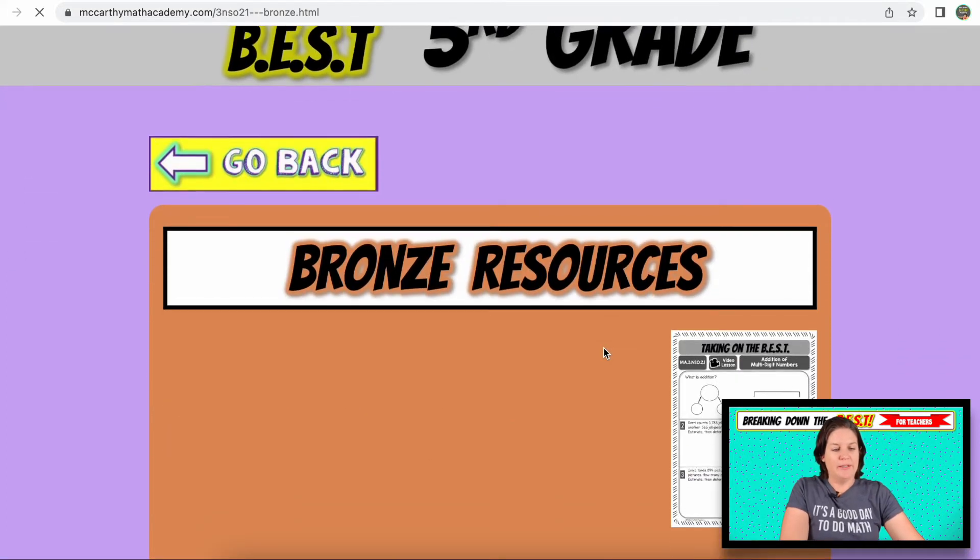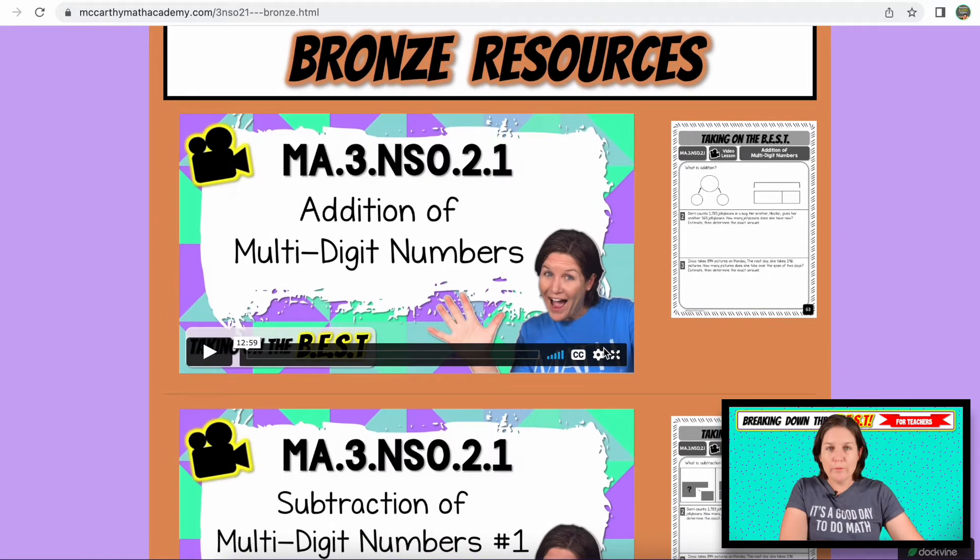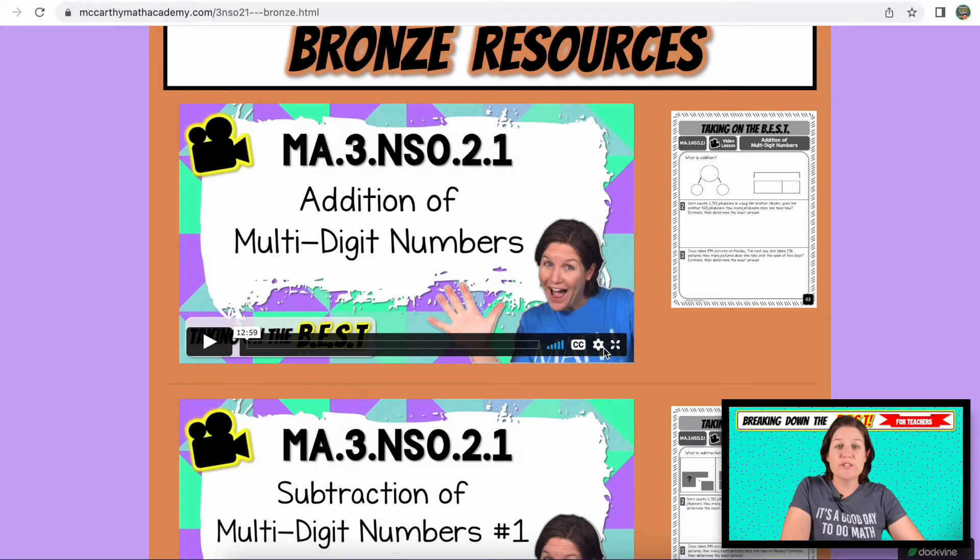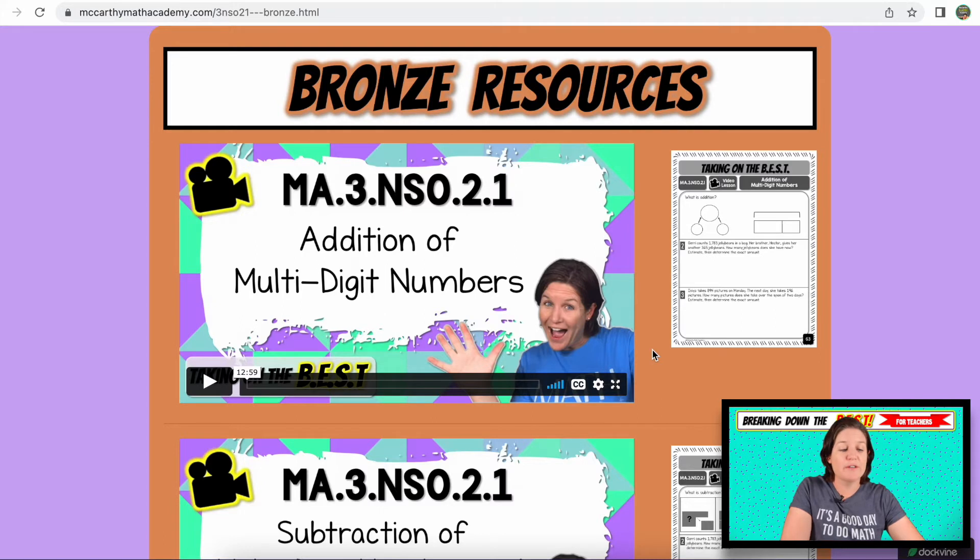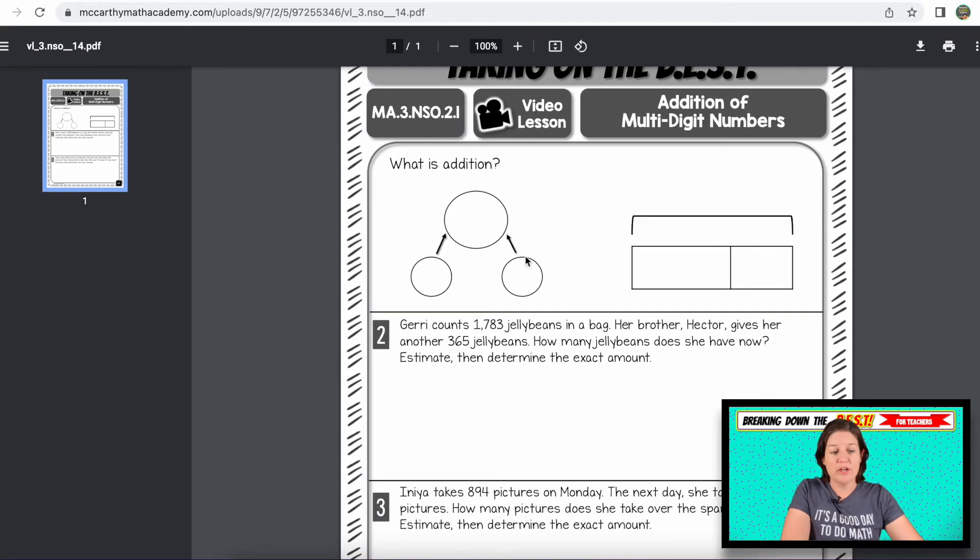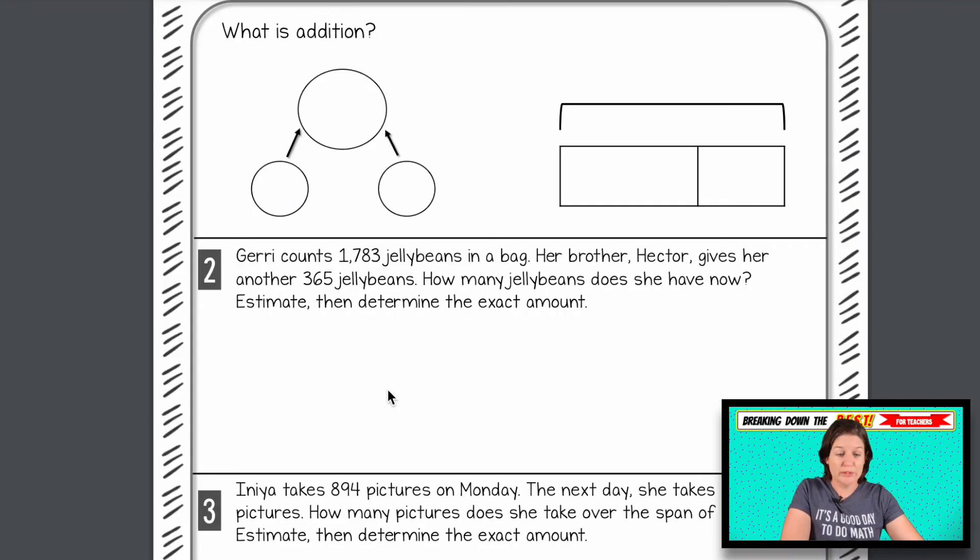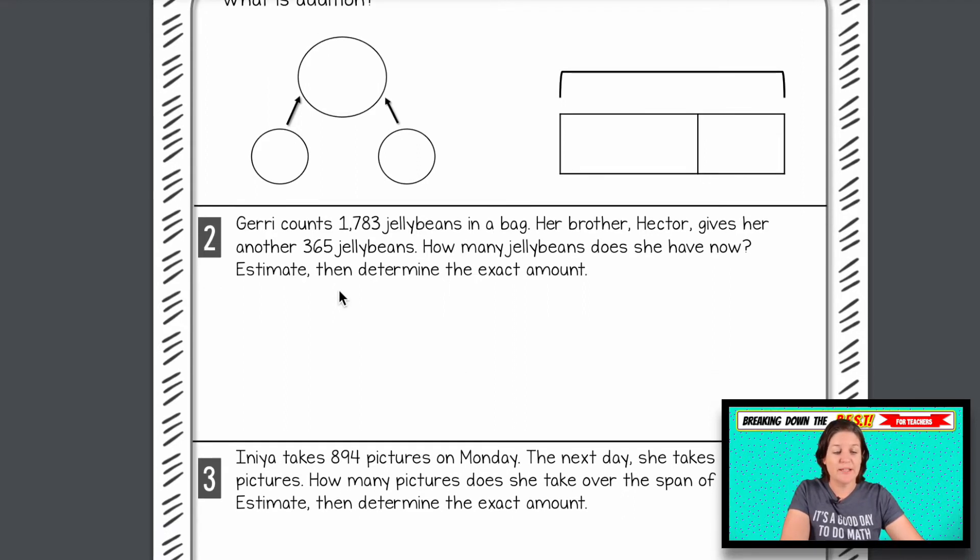Okay. Now, if you have a bronze membership, silver membership, or gold membership, you do have access to these bronze resources. The bronze resources are the video lessons and the printable workbook pages right next to it. So in this one, it says addition of multi-digit numbers. Here's your printable guide. You can see that in the video, we're going to talk about what addition is using some of these models. Then we will solve some real world problems and break down why we are adding in these. Notice that it does say to estimate and then determine the exact value for each. So we do do that in the video lessons.